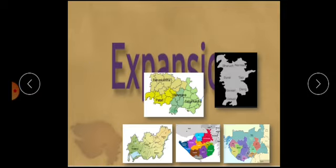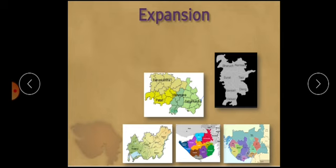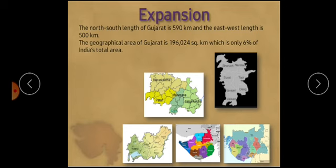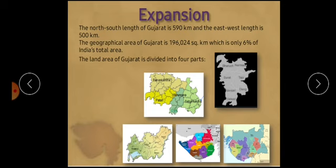Next we are going to study expansion. The north-south of Gujarat is about 590 km while the east-west is about 500 km. Gujarat has a geographical area of about 1,96,024 km², which is about 6% of the total Indian territory. Gujarat is the largest state in India.